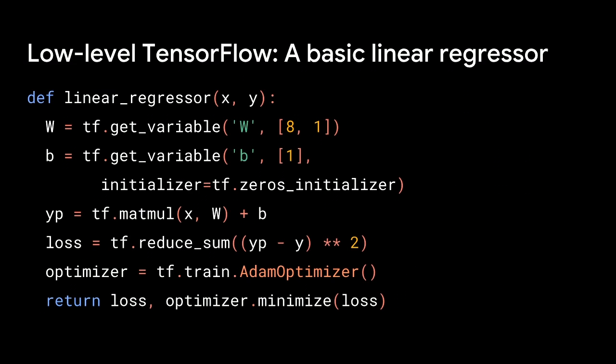Here is a simple implementation of a linear regressor using TensorFlow. We first describe our stateful nodes — our variables w and b, the values we want to learn. We take as input x and y, our training data and labels. We compute predicted values yp with a matrix multiply, compute the loss with squared error, and then minimize the loss using TensorFlow's automatic differentiation with an Adam optimizer, which is a variation on a momentum optimizer. Highly recommended.